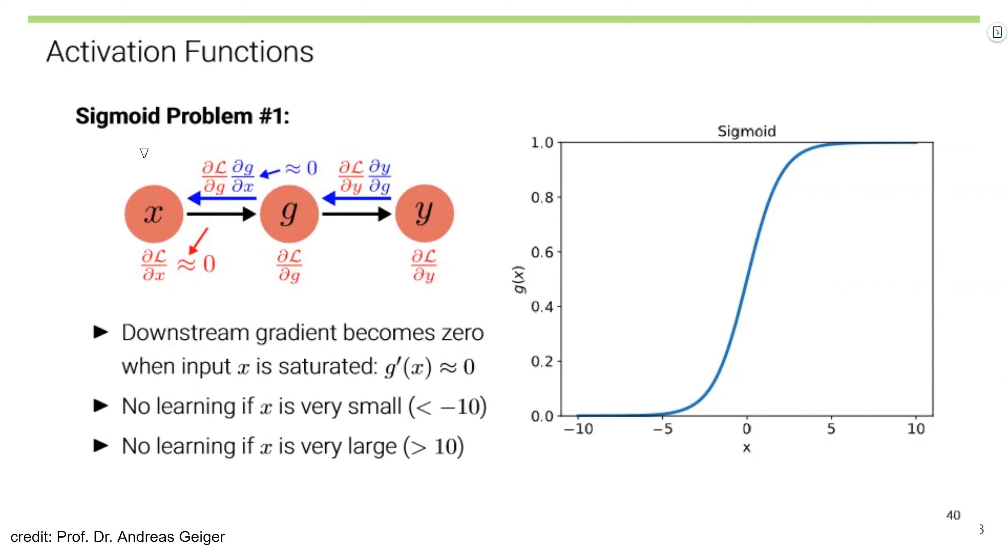Let's have a deeper look at the first problem. Because we are calculating gradients using local gradient and the upstream gradient, this one is upstream, local. If one of them becomes 0, then the later part will have no gradients, like all 0 gradients. In other words, downstream gradients become 0 when input x is saturated. We could say no learning occurs if x is very small, like less than minus 10, or if x is very large, larger than 10. Here, as you can see, the slope is almost 0.